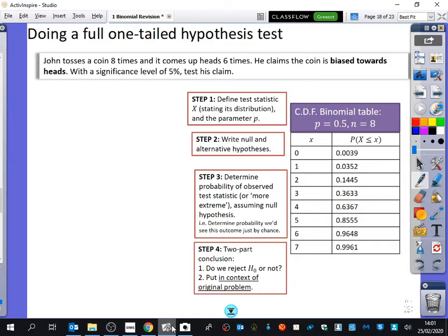We should already remember, is this going to make him think that the coin is biased towards heads six times? No, it wasn't. Remember, the critical region was seven. So we're going to do it in a slightly different way to just show that this works. Step one, define the test statistic X, stating its distribution. Let X be the number of heads.